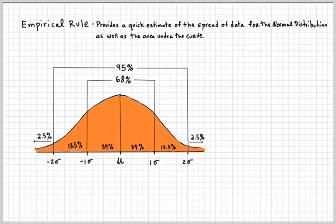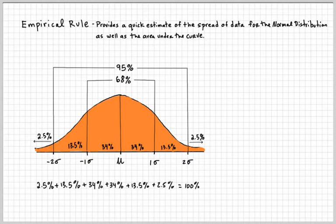And then, of course, the rest, 2.5 here and here. So, when you add up all these values, all these pieces, all these six pieces, you get 100%, which is part of the properties of the standard deviation.